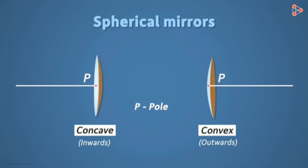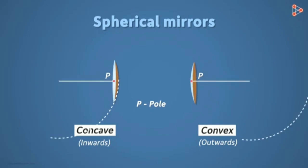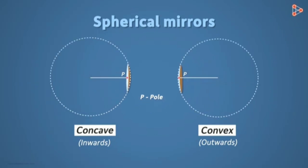We studied about three types of mirrors. The first one is the plane mirror, the second is the concave mirror, and the third is the convex mirror. The plane mirror has a flat reflecting surface, while the concave mirror curves inward.